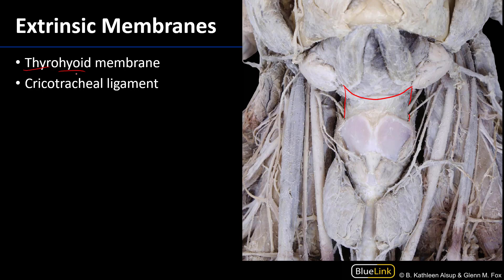That thyrohyoid membrane is traversed by some important neurovasculature, which we can see there. This will include the internal branch of the superior laryngeal nerve, as well as the superior laryngeal artery, which is a branch of the superior thyroid artery.